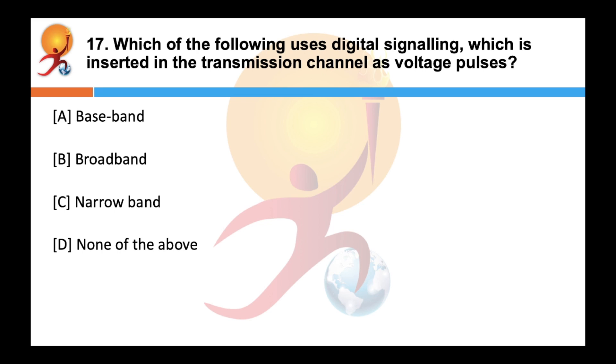Which of the following uses digital signaling which is inserted in the transmission channel as voltage pulses? Correct answer is baseband. Baseband signaling is defined as one that uses digital signaling which is inserted in the transmission channel as voltage pulses.